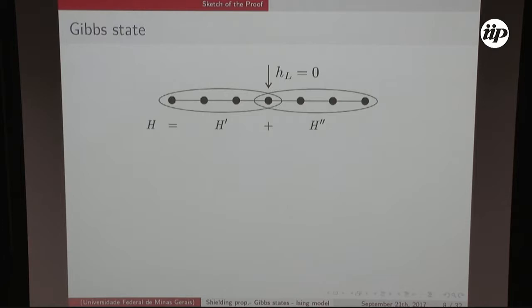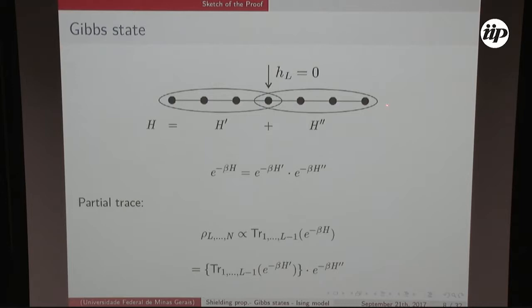Considering the Gibbs state without normalization, I write the exponential of the Hamiltonian as a product of two terms since they commute — there is no sigma_x coupling across sides. To calculate the reduced state via partial trace, I use this separation and show I only need to calculate the partial trace of H1. I'll show this term is proportional to the identity operator. Being proportional to the identity, after normalization I'm left with just the H2 term describing my reduced state.